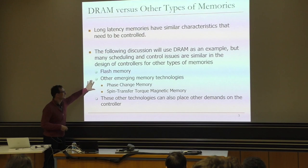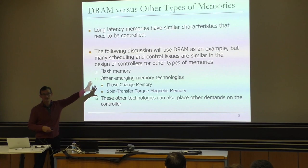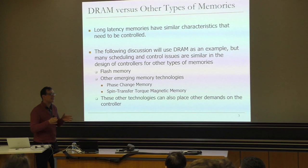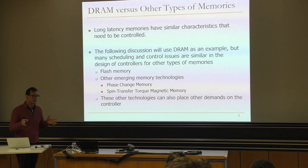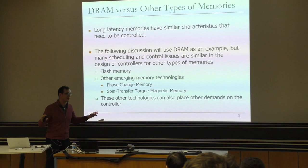Even though DRAM has a lot of errors today — like Rowhammer — these memories also have a lot more errors and different failure mechanisms. For example, flash memory has a wear-out problem. If you keep writing to a cell, after some number of writes you cannot write to or read from the cell — the cell becomes non-operational. That's called wear-out. The memory controller manages to ensure that cells wear out evenly, so no part of memory wears out earlier than another. That's called wear-leveling.